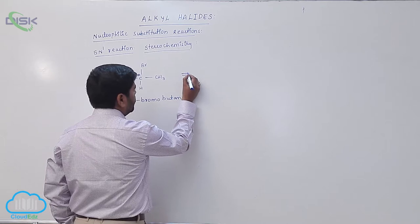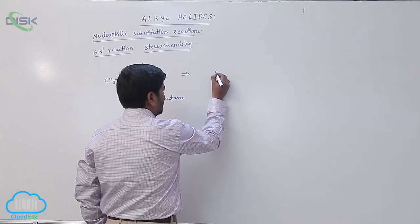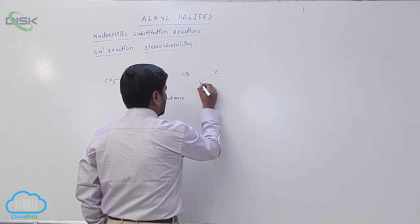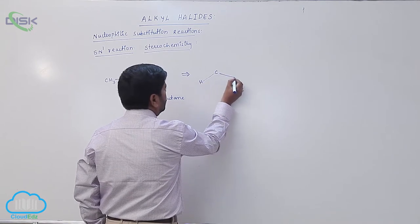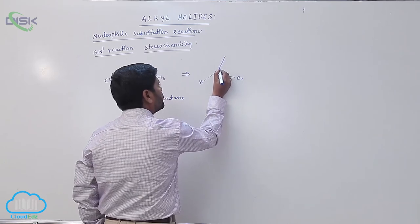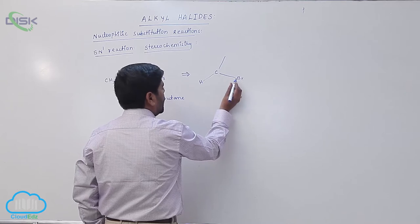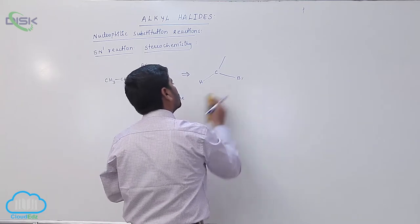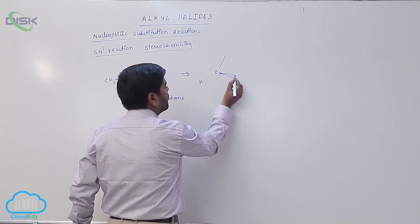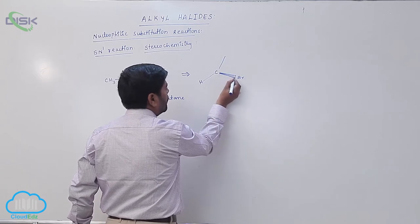Now, drawing this structure. Here is hydrogen, here is Br.